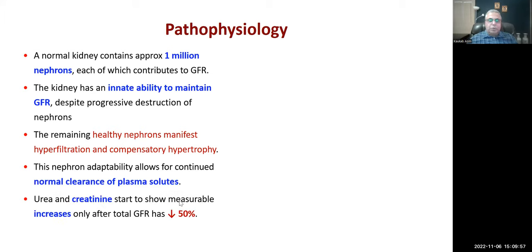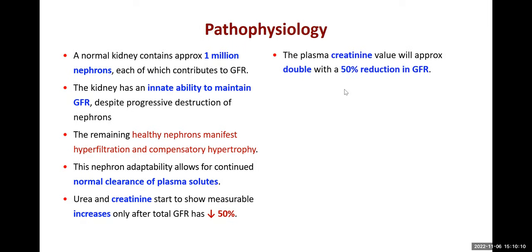Urea and creatinine start to show measurable increases only after total GFR has fallen below 50%. The plasma creatinine value will approximately double with a 50% reduction in GFR. Normal GFR is about 120 ml per minute per 1.73 meters squared. So if the GFR is reduced by 50%, the creatinine level will double. Sometimes we have a normal creatinine level even when significant kidney function has been lost.